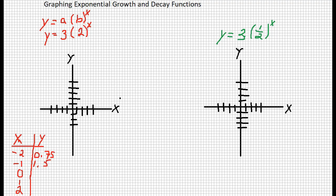What if I plugged in 0? 2 to the 0 power is 1. 3 times 1 makes 3.